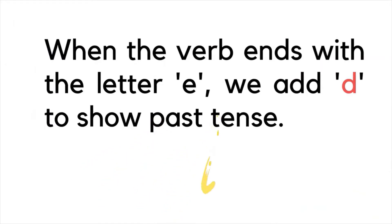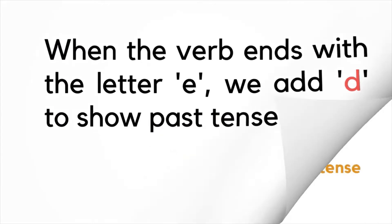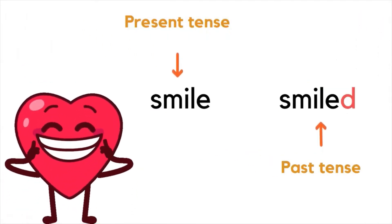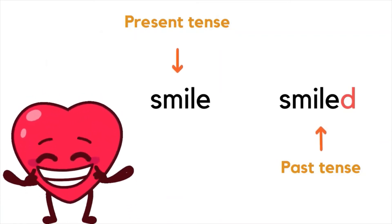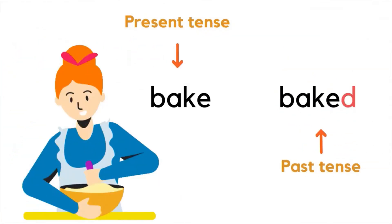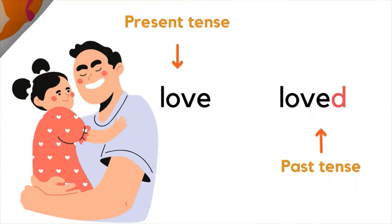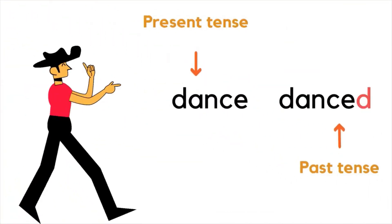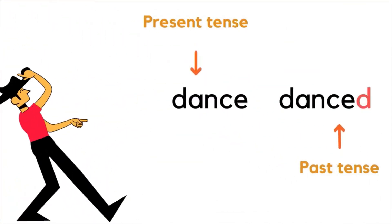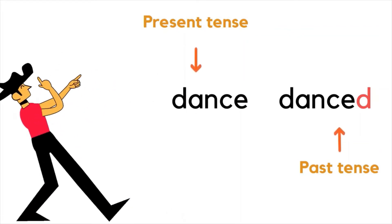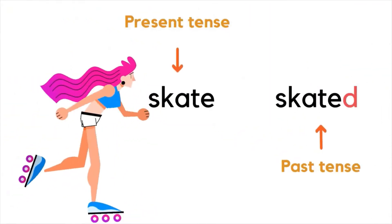When the verb ends with the letter E, we add D to show past tense. For example: smile / smiled, bake / baked, love / loved, dance / danced, and skate / skated.